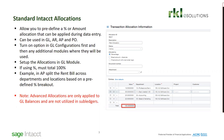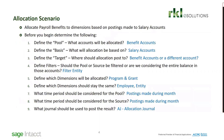The advanced allocation module is only applied to GL balances, and it cannot be used in the subledgers such as AP and AR. The advanced allocation module is much more complex, in that it allows you to take a balance at the end of a period defined by you and redistribute to another account based on those balances.